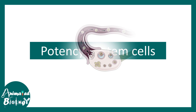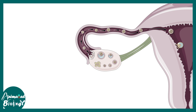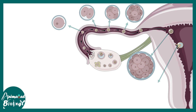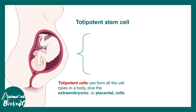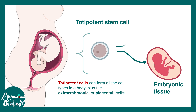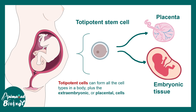Let's talk about the potency of stem cells. Stem cells have the highest potency at the zygote stage — at this point it is known as a totipotent stem cell. It divides to a two-cell stage, four-cell stage, and eventually forms the morula and the blastocyst. The blastocyst has pluripotent stem cells. Totipotent stem cells can give rise to embryonic tissue as well as extra-embryonic tissue like the placenta. The zygote is the only totipotent stem cell known in humans.